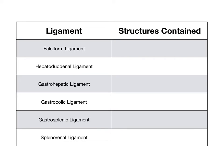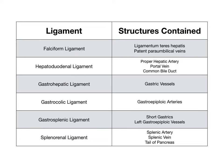Let's go through these one at a time. The falciform ligament contains ligamentum teres hepatis and patent paraumbilical veins, if present. The hepatoduodenal ligament contains the proper hepatic artery, the portal vein, and the common bile duct. The gastrohepatic ligament contains the gastric vessels. The gastrocolic ligament contains the gastroepiploic arteries. The gastrosplenic ligament contains the short gastrics and the left gastroepiploic vessels. And the splenorenal ligament contains the splenic artery, the splenic vein, and the tail of the pancreas.